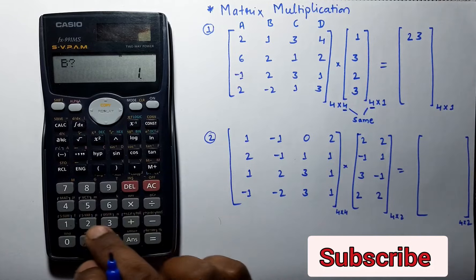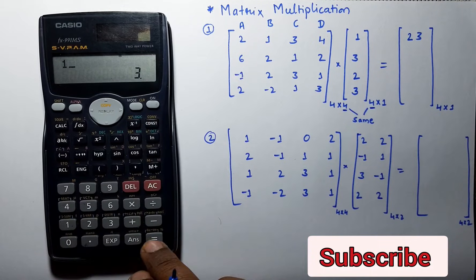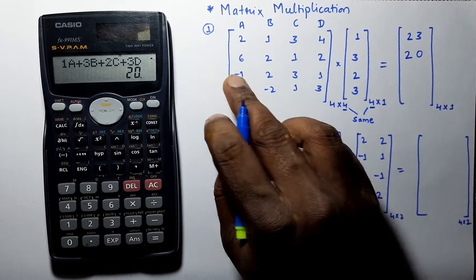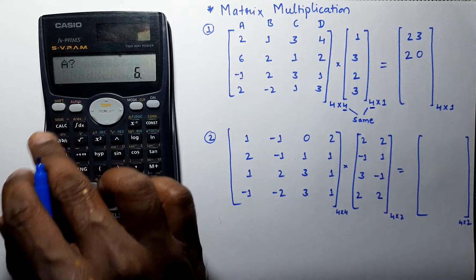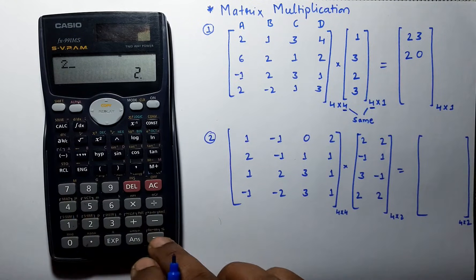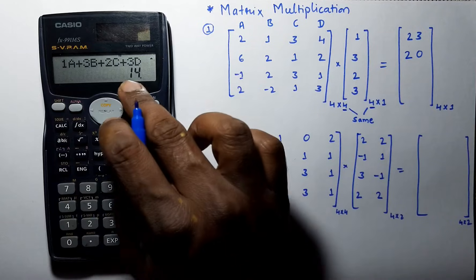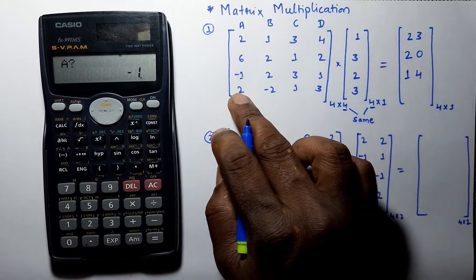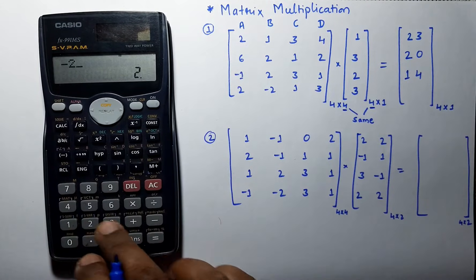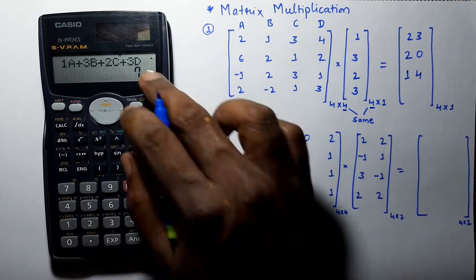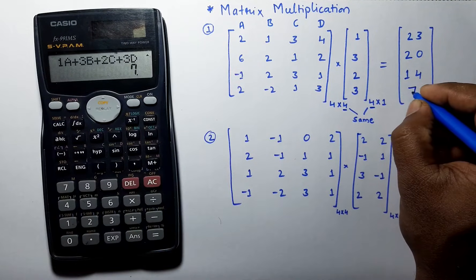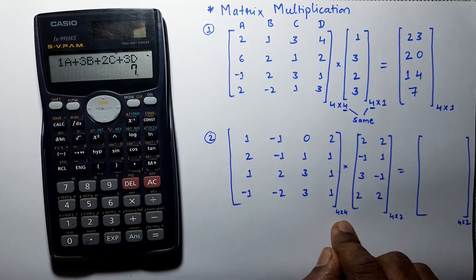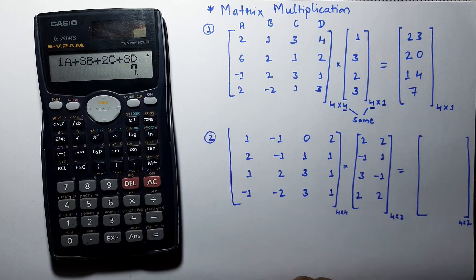We get the value as 23. Again press the calculate button and it will ask for other values of a, b, c, and d. Enter the values and we get the answer as 20. Then repeat this process — press calculate again and enter all other values — and we get the answer. It is 7.